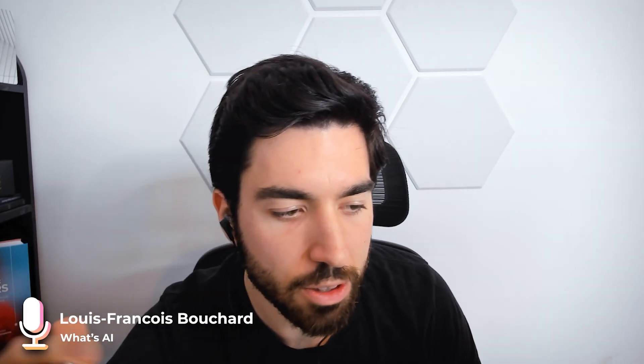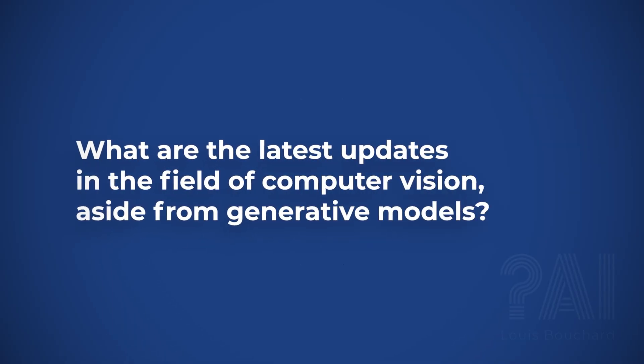We've seen the progress of these models recently, but since you've been in the computer vision industry for maybe 20 years, what's changed in terms of other image tasks other than the new generative ones? A lot. We used to do computer vision by creating what we would call kernels or filters that would do really, really simple tasks at first.